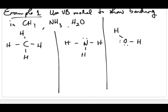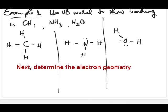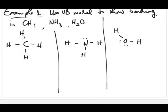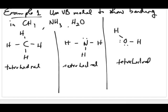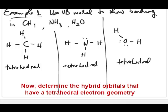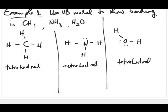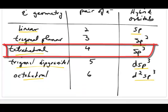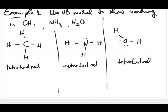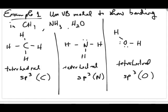Drawing the Lewis structures for all three molecules reveals their lone pairs and bonding pairs. What matters here is the total number of electron pairs on each central atom. In all three molecules — CH4, NH3, and H2O — the central atom has four pairs of electrons, giving tetrahedral electron geometry. Tetrahedral geometry means the central atom uses SP3 hybrid orbitals: SP3 for carbon in CH4, nitrogen in NH3, and oxygen in H2O.